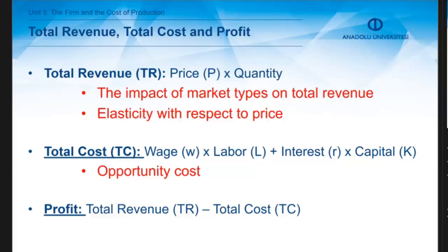We can also say that total cost increases as more labor and capital is used during the production process. Finally, profit is defined as the difference between total revenue and total cost, and the objective of a firm that produces goods or services to sell is to maximize its profit.